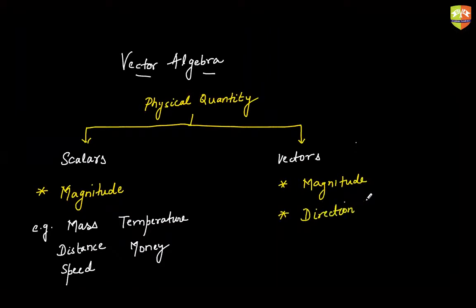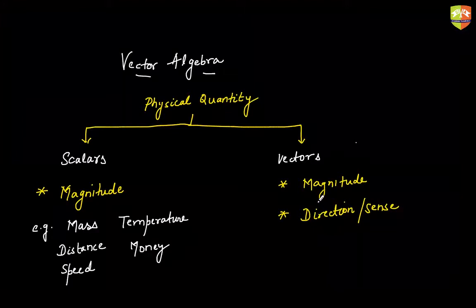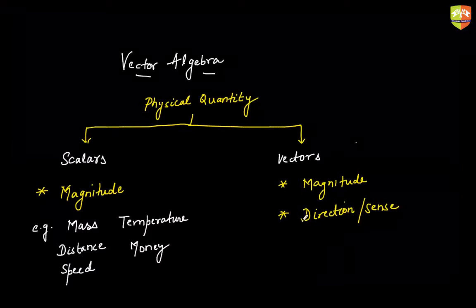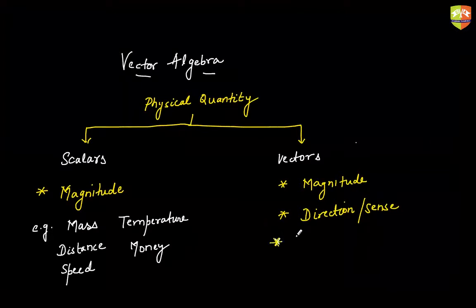Whereas quantities which require both magnitude and direction — also called sense — are vector quantities. But are magnitude and direction sufficient for a quantity to be called a vector? No. These two parameters are necessary but not sufficient. You need a third parameter as well: vectors must follow the parallelogram law of addition.